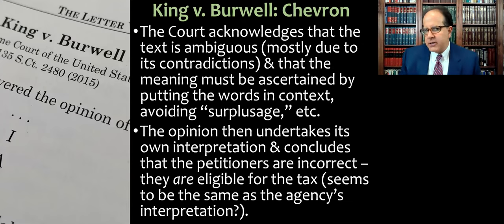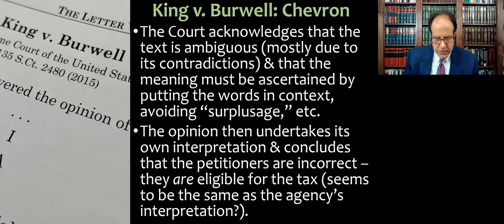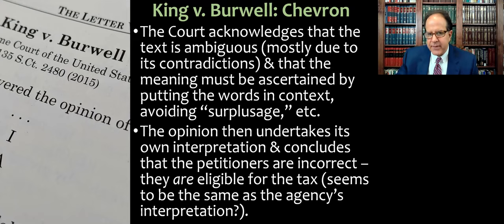The court acknowledges that the text is ambiguous, mostly due to its contradictions, and says that the meaning must be ascertained by putting the words in context and avoiding surplusage — a canon of statutory construction that says we should interpret the words so that all parts have effect, and we're not interpreting parts of the statute in a way that makes other words meaningless or redundant. The opinion then undertakes its own interpretation and concludes that the petitioners are incorrect.